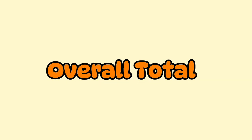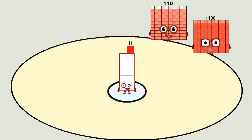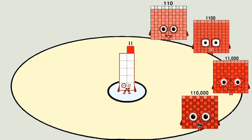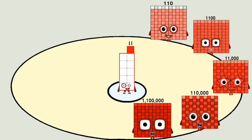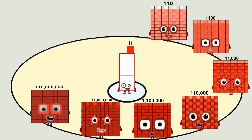Overall total: 110. 1,100. 11,000. 110,000. 1,100,000. 11,000. 110,000. 1,100,000.